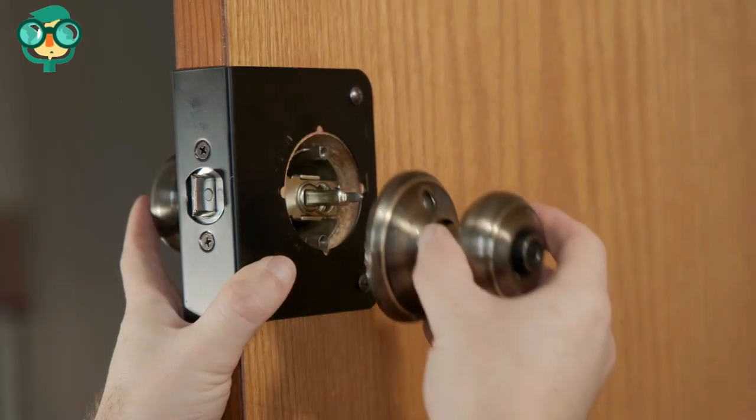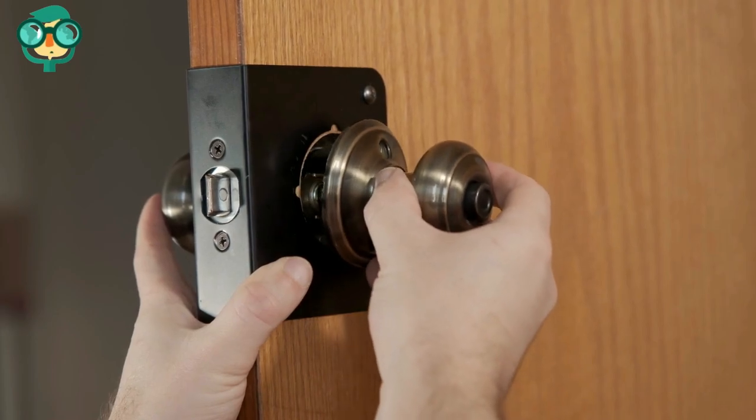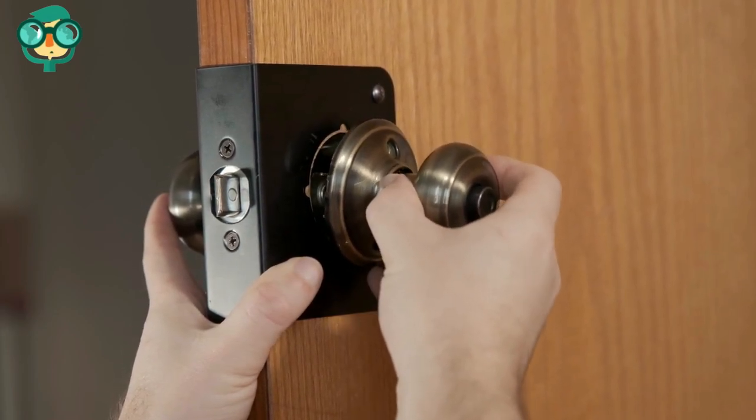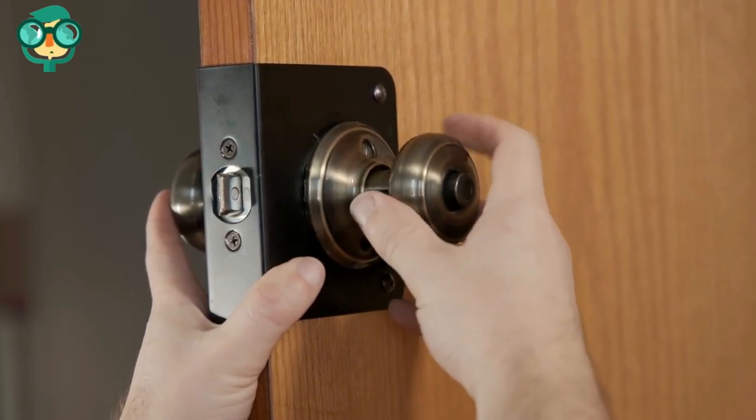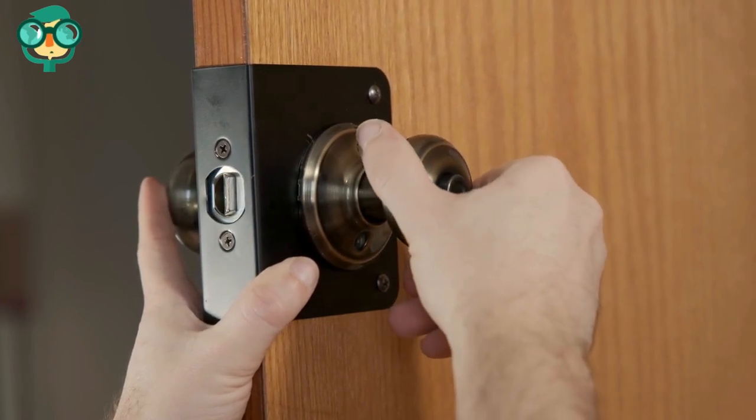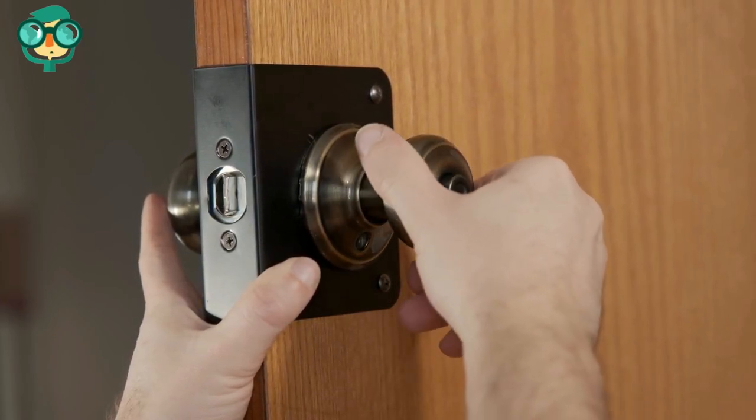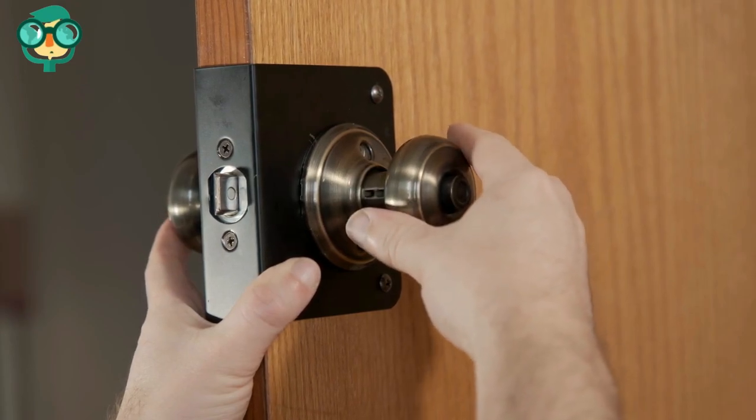Put the latch bolts and faceplate back on the side of the door. Put the outside doorknob on. Then, put the inside doorknob on. Put on the faceplate. Tighten all of the screws. Turn the doorknob to make sure everything is turning smoothly.